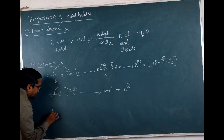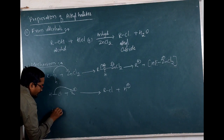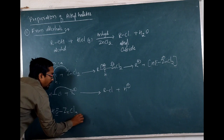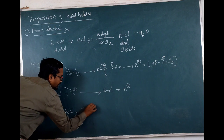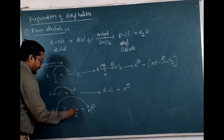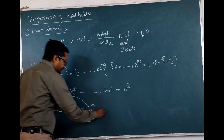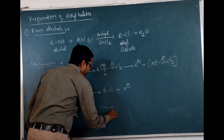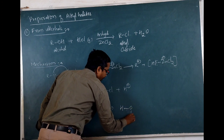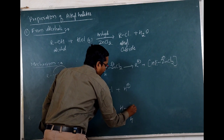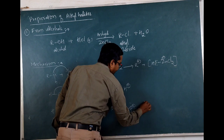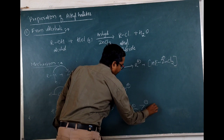Now in the next step: we have that intermediate, that is the positively charged HO·ZnCl2 species, and we have a proton. These electrons from this species are donated to this proton, and hence it will form H–O–H with a positive charge over oxygen, then Zn⁻ and Cl2.